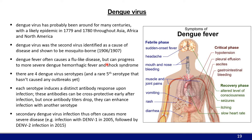Dengue virus has likely been around for many centuries. One of the first well-described epidemics was in 1779–1780, spreading throughout Asia, Africa, and North America. In 1906, dengue was shown to be transmitted by Aedes mosquitoes, and one year later it was shown to be due to a viral infection — only the second virus ever identified as a causative agent of disease, demonstrated at the time simply by showing the agent was filterable. Infection often results in a flu-like disease with severe muscle pain, joint pain, fever, rash, nausea, pain around the eyes, and general headaches — also called breakbone fever.